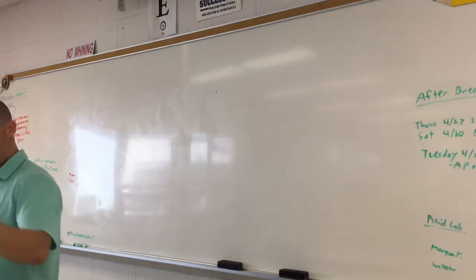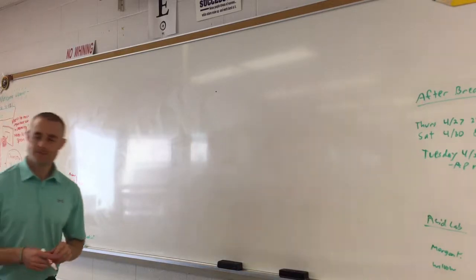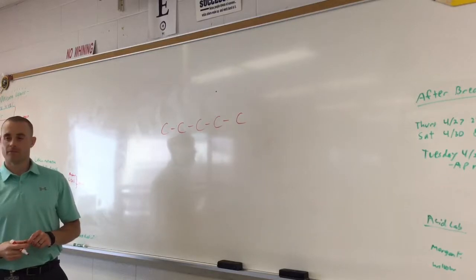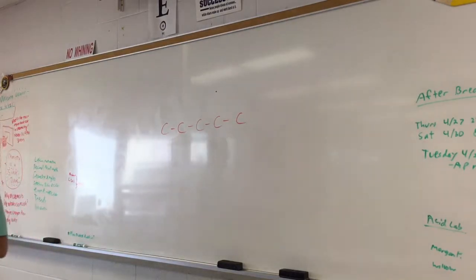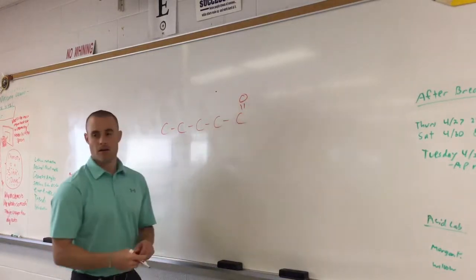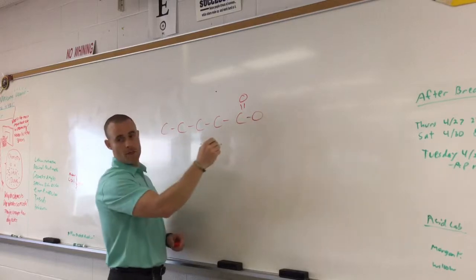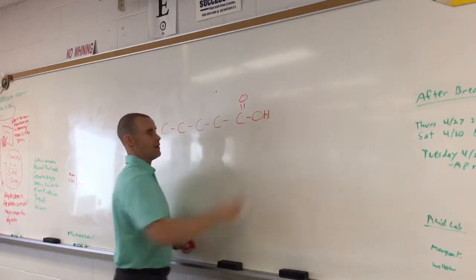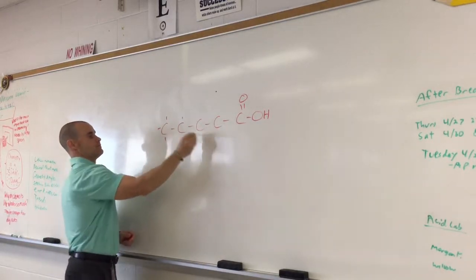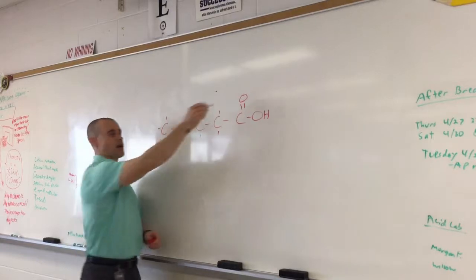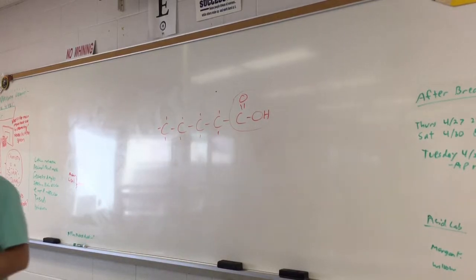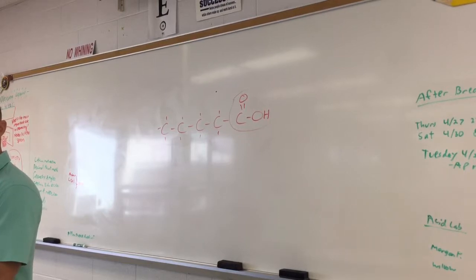Go to number five, pentanoic acid — Lexi, how many carbons? One, two, three, four, five. Good job. What makes it an '-oic acid'? The double-bonded oxygen on the last carbon, and then another oxygen with an H — there it is. So that's pentanoic acid. This makes it an organic acid, also called a carboxylic acid. That's called the carboxyl group — you don't need to know that, just in case you're on Jeopardy or something.